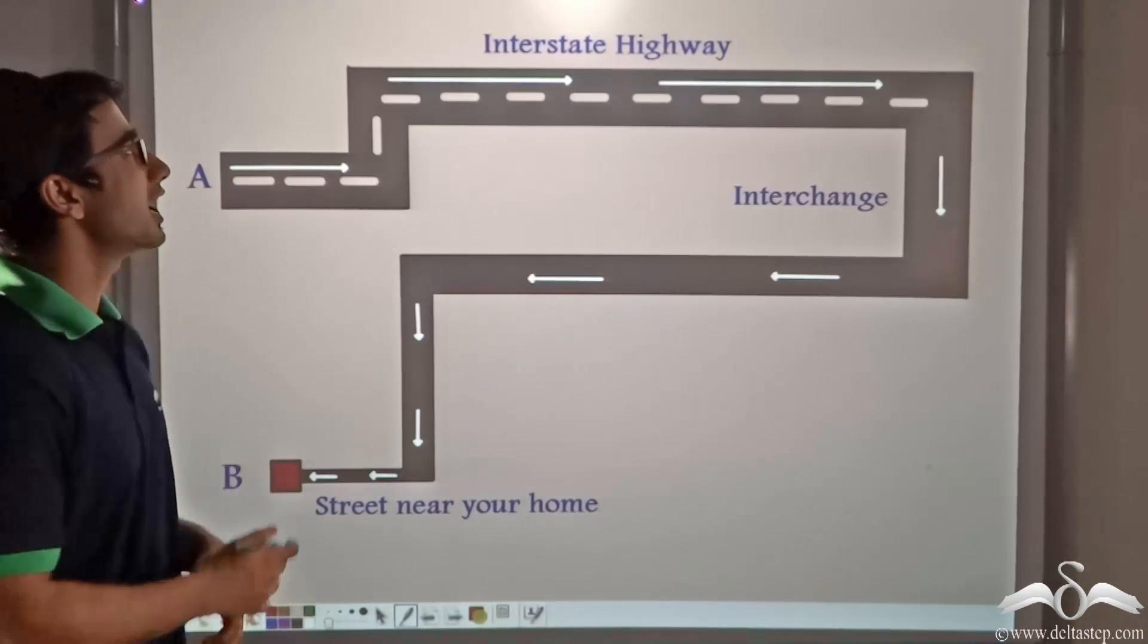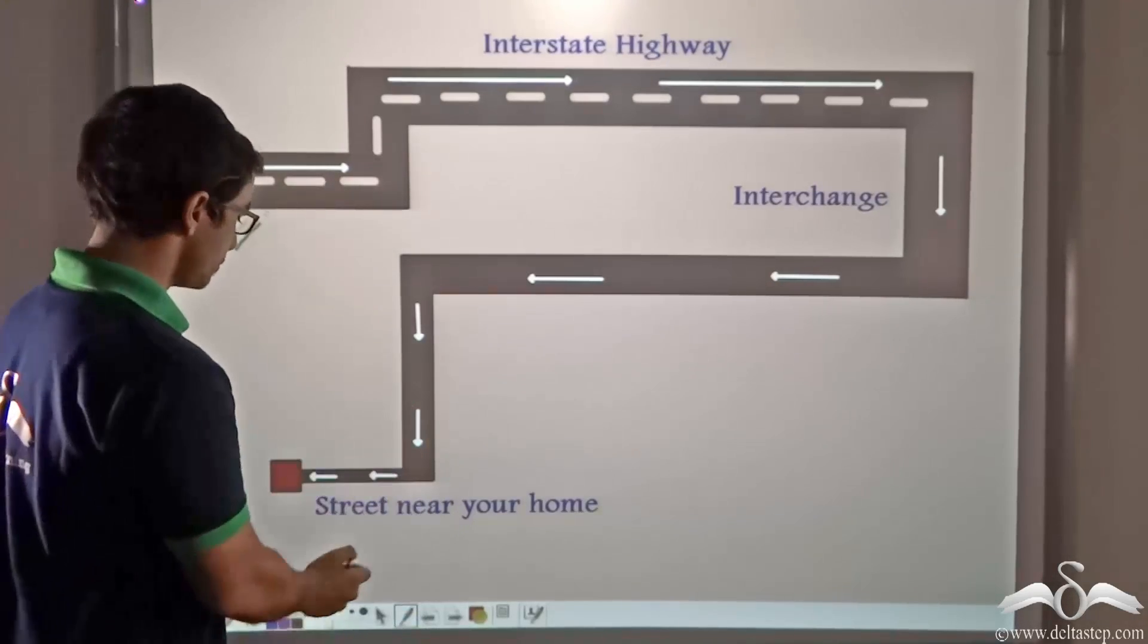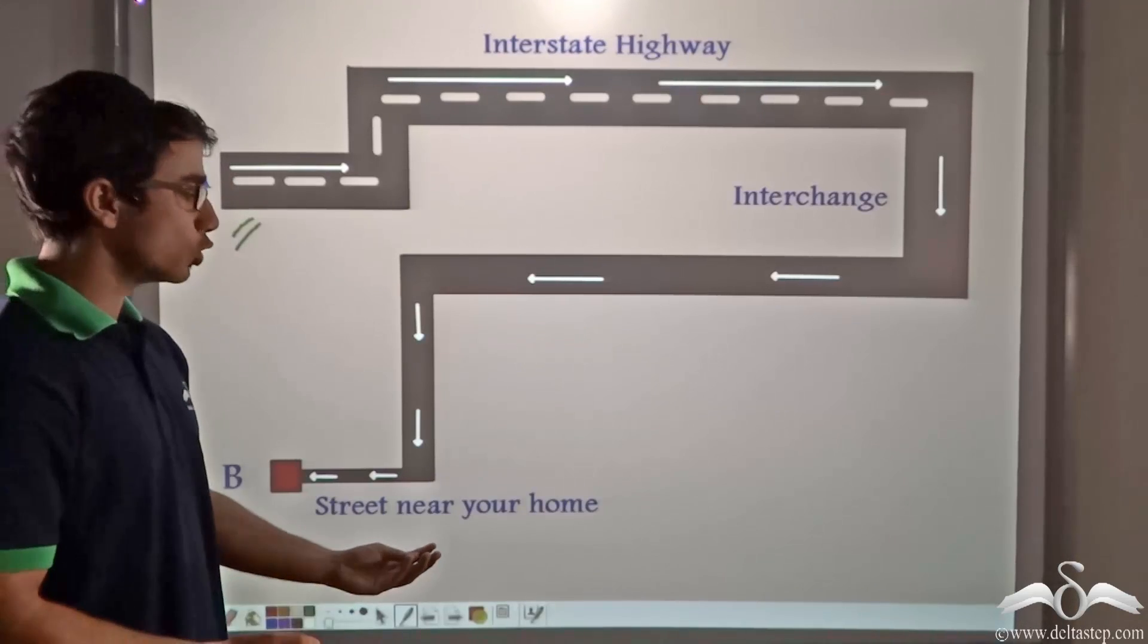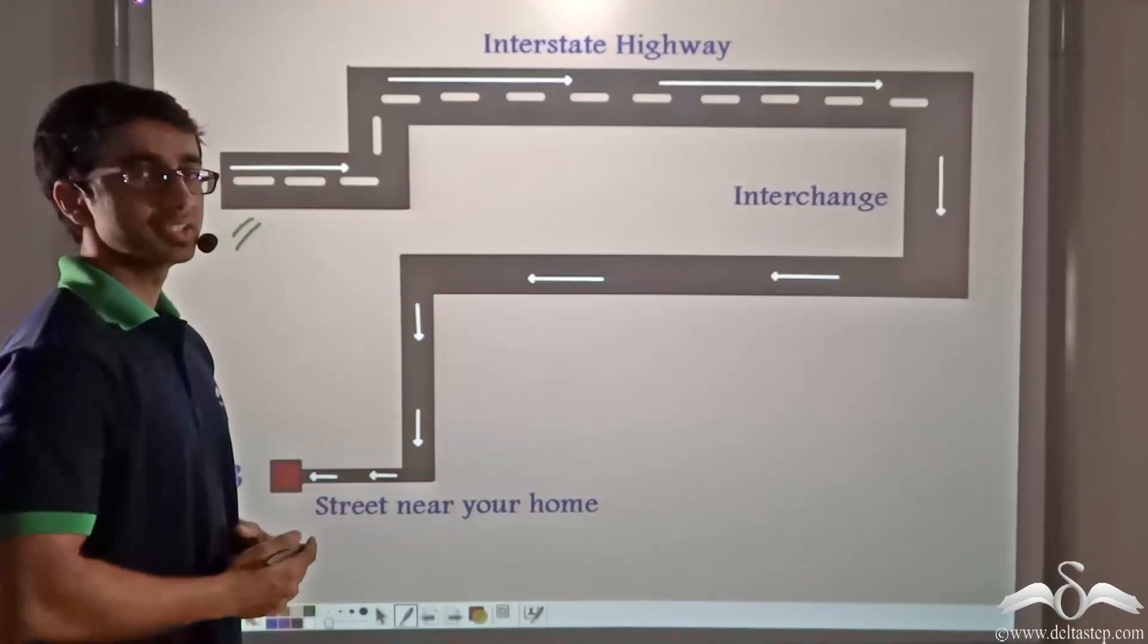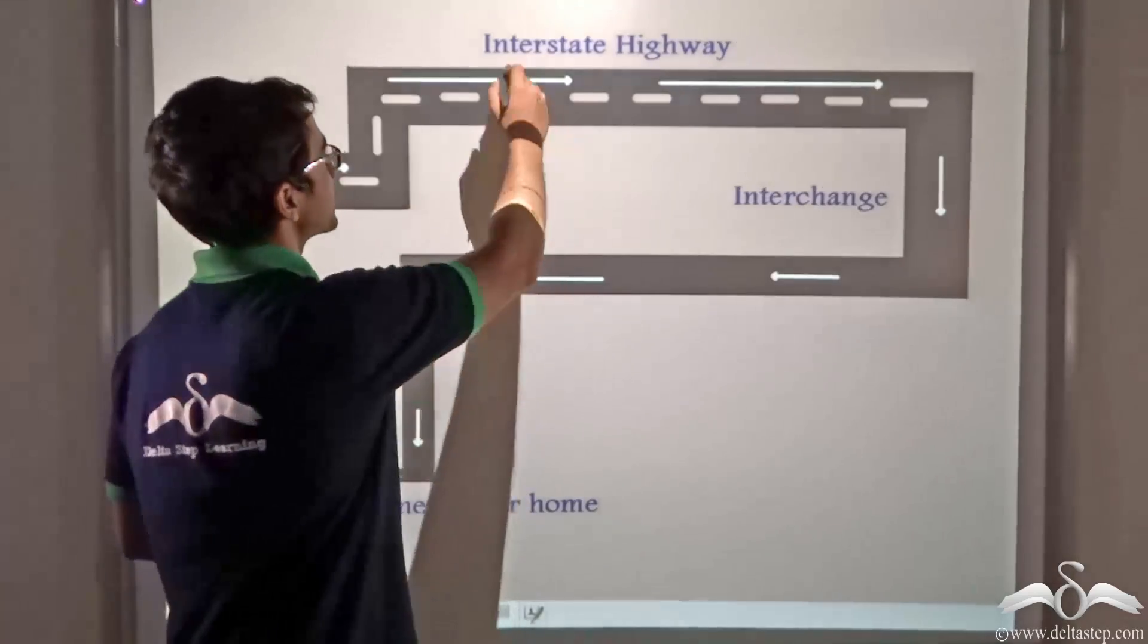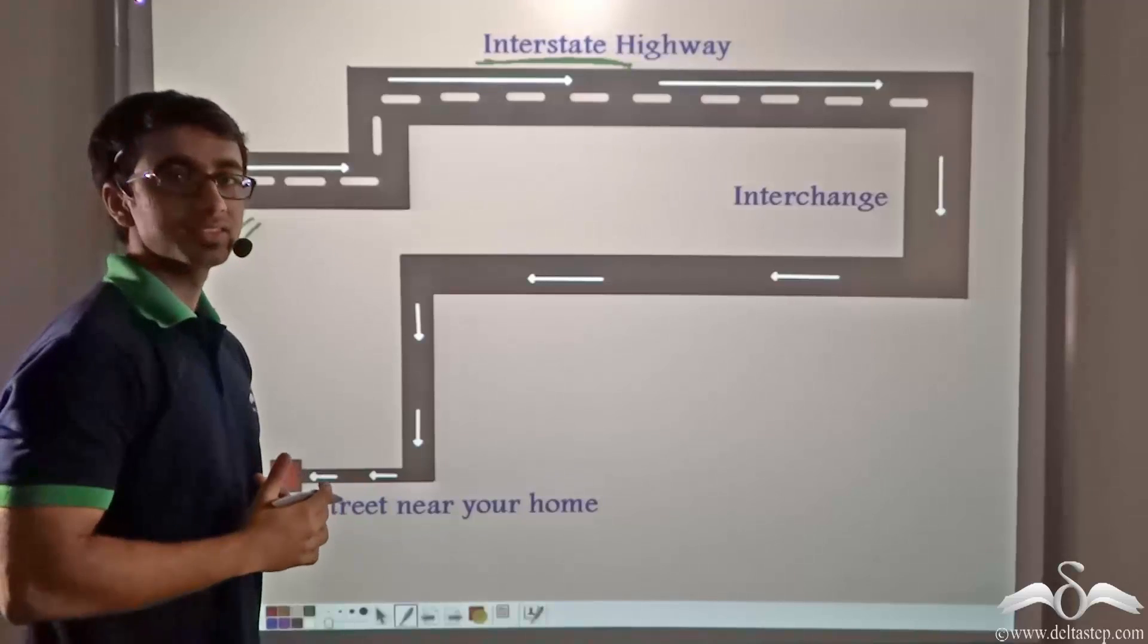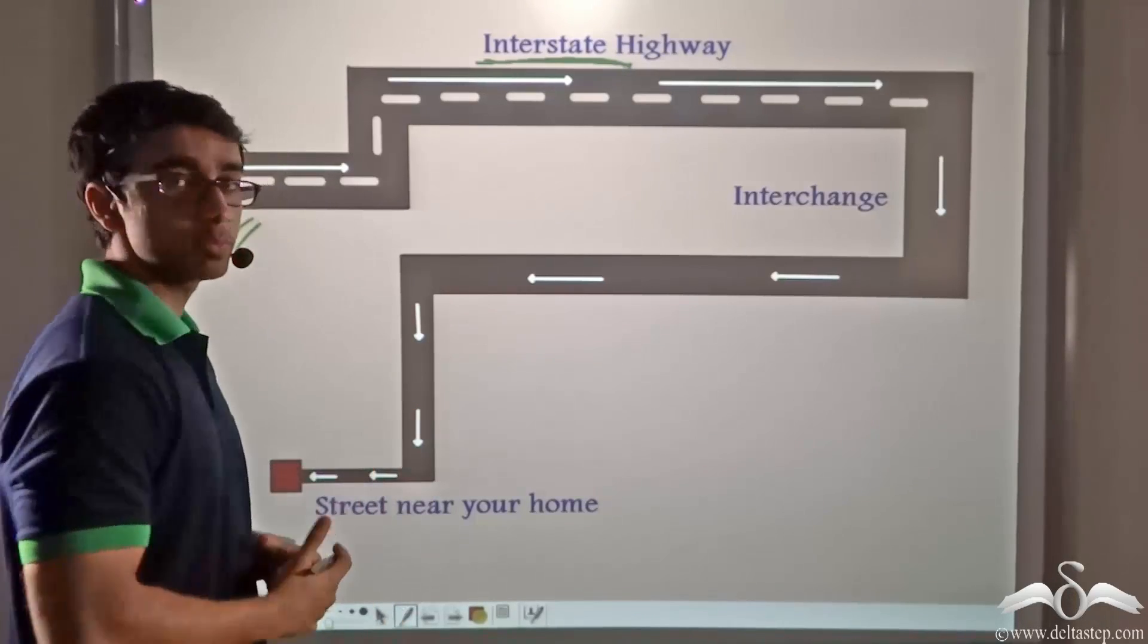Over here, a highway has been shown and a car has to reach from point A to point B. At point B is located the home of the driver of the car. So while coming along the highway, the driver takes the interstate. So along the interstate, because it is a highway, the driver drives at a very fast speed because he wants to reach his home fast.